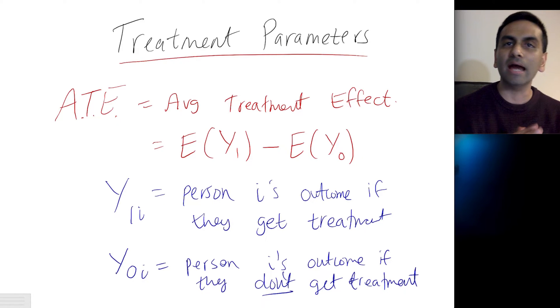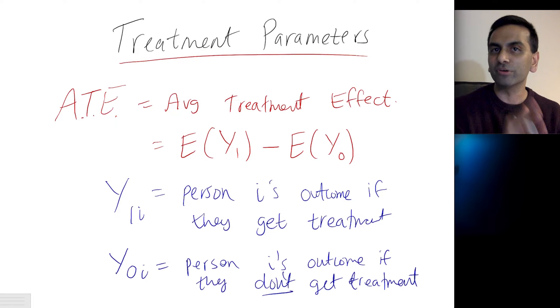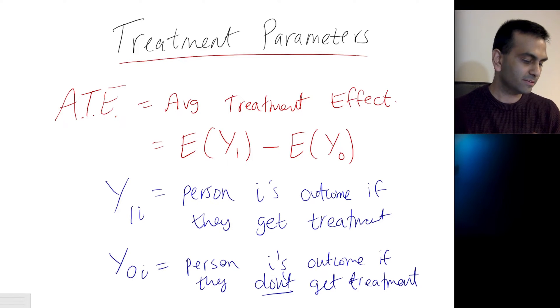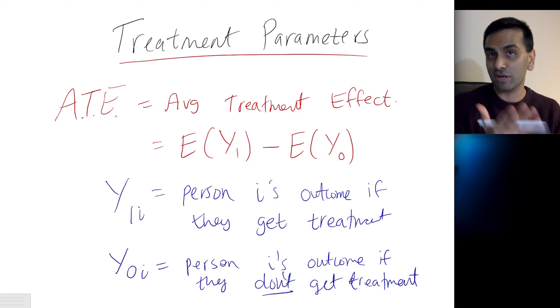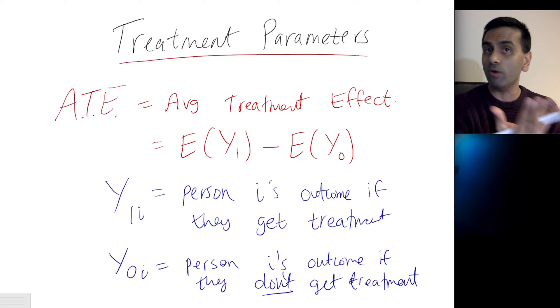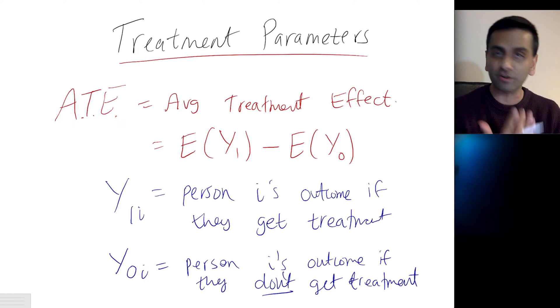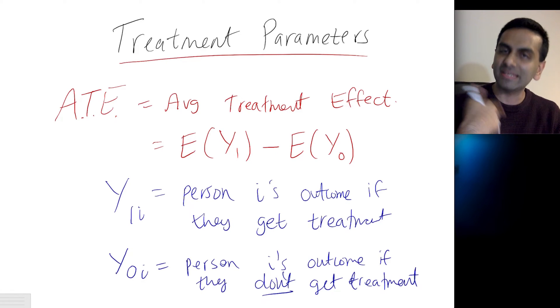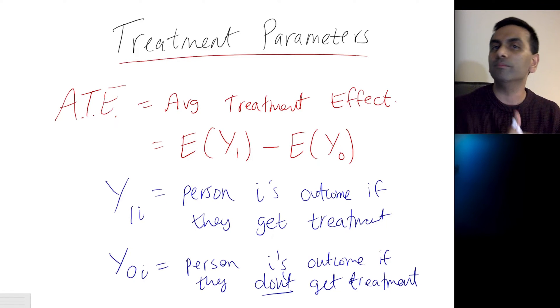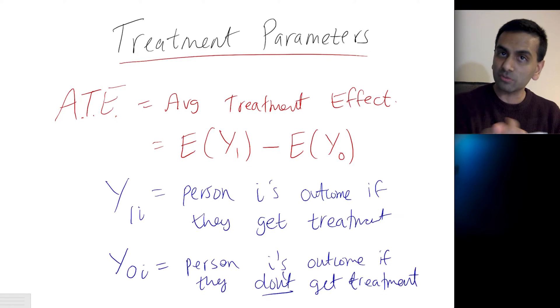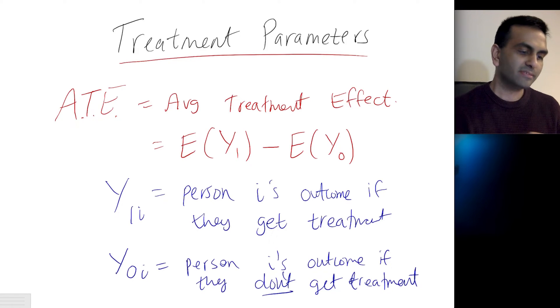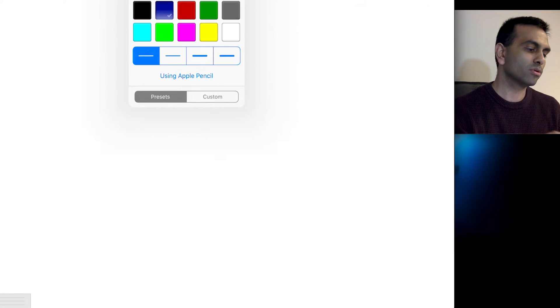At any given point in time, you can't know what that person's income is under both conditions. Either they have a college degree, in which case you see their Y1 — their current income is that person's Y1 value — or if they don't have a college degree, their current income is their Y0 value. But for that same person, you obviously can't know what the other Y is.